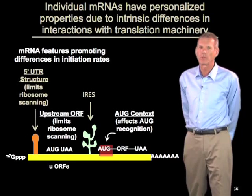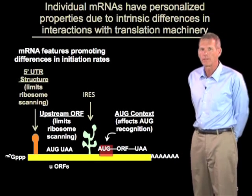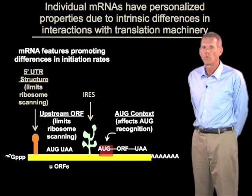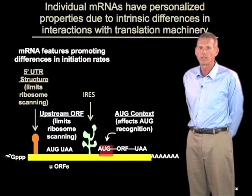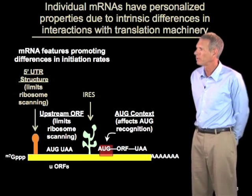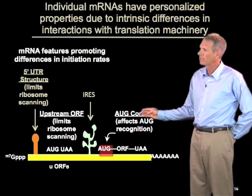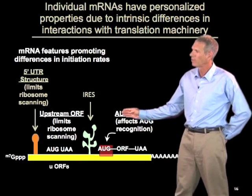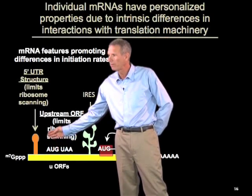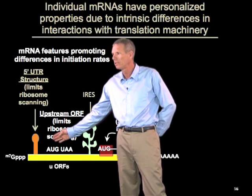One of the properties of translation is that different mRNAs translate at different rates. That's due to two kinds of features. One are intrinsic differences in how the mRNA interacts with the translation machinery. For example, some mRNAs can have strong secondary structure in their 5' UTR, which prevents the ribosome from loading on or scanning to the AUG.